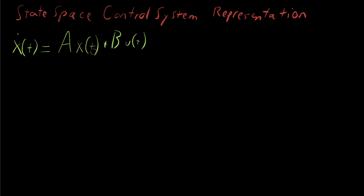So B is our input matrix. A is our state matrix. X is our state, the internal state of the control system. And this is our general equation for updating the state.